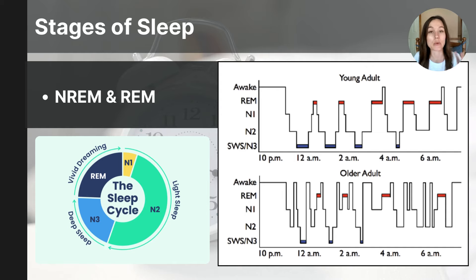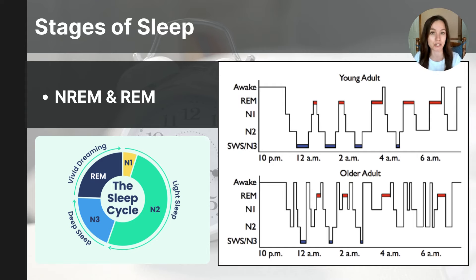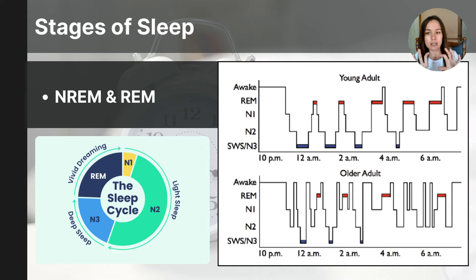Now that you're familiar with what's happening in the brain and body during each of these stages, it's important to understand the cycle of when these stages occur throughout the night. You will cycle through each stage multiple times before waking in the morning. There are two diagrams here that help you notice the cycles and the lengths of time spent in each stage.